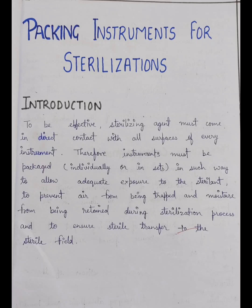Sterilization is done using the autoclave machine. Autoclaving uses high temperature and high pressure to kill microorganisms like viruses, bacteria, and fungi. We use the autoclaving process for materials going to the hospital — whether mattresses, bed sheets, macintosh, or any OT instruments — all instruments need to be packed properly.